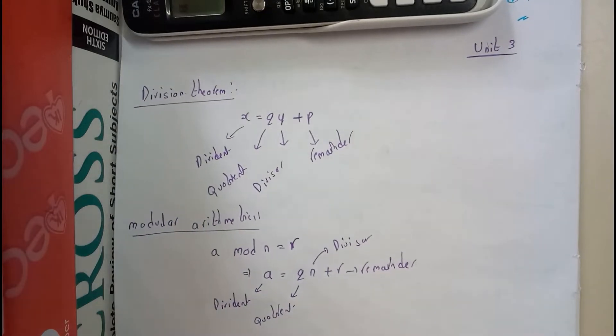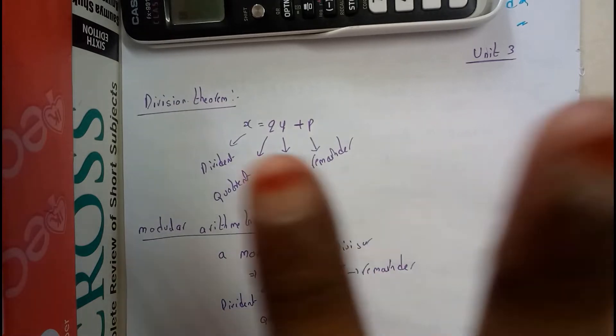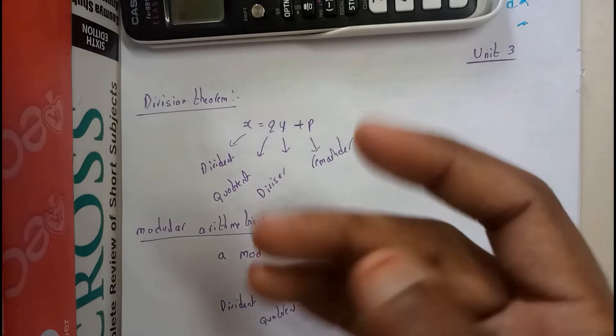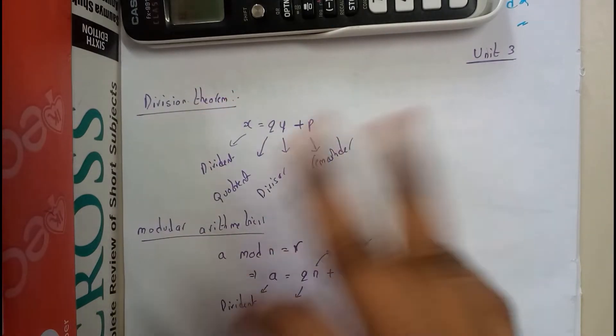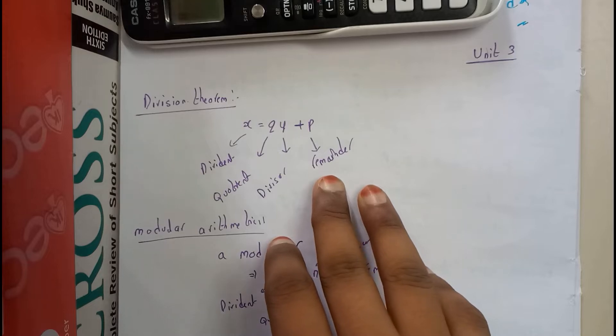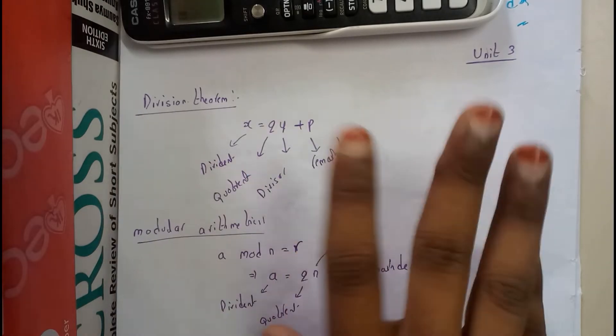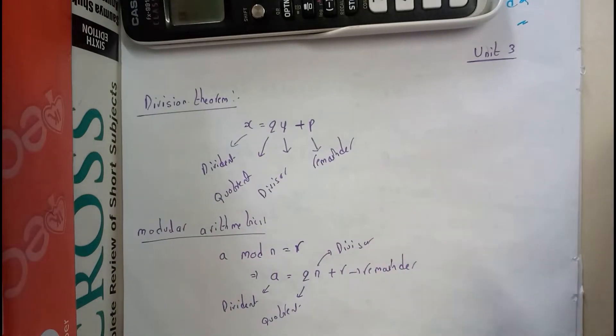We can expect a problem on GCD and any one of the theorems. We have three theorems: Chinese Remainder, Fermat's, and Wilson's. Among them, we can expect one theorem for five marks, a problem on them for five marks, and a GCD problem for five marks. These are the things I expect for the exam, and the rest will be for two marks.